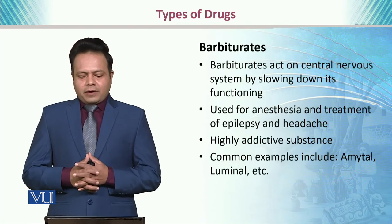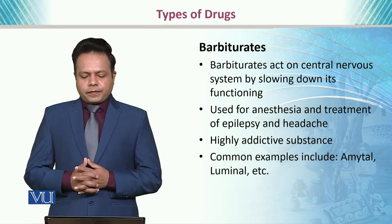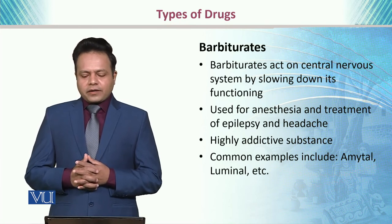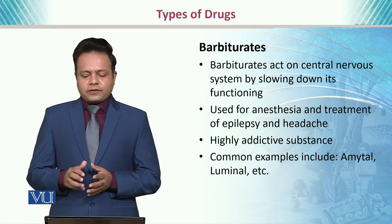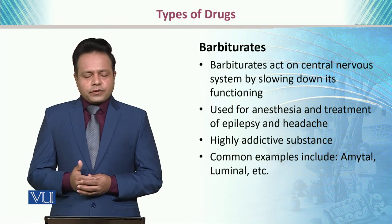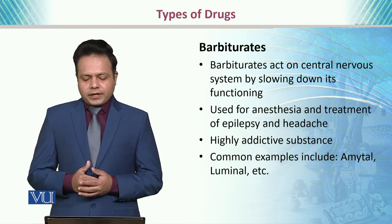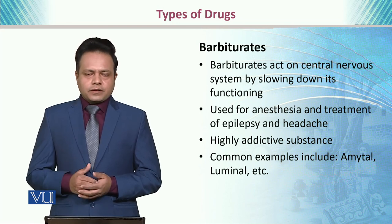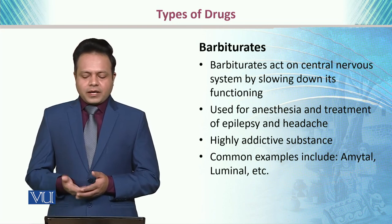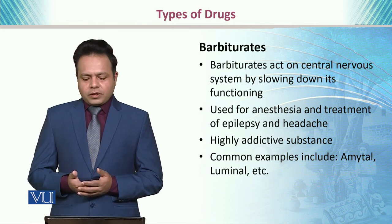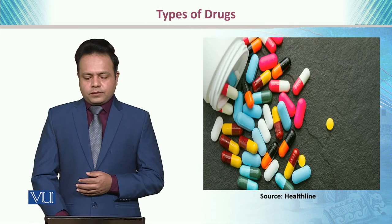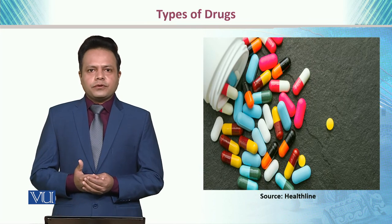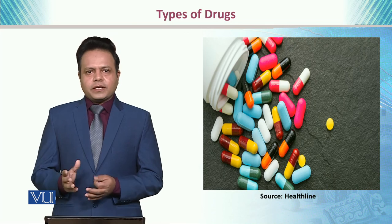Then we have barbiturates. Barbiturates act on the central nervous system by slowing down its functioning, and are used for anesthesia and treatment of epilepsy and severe headaches. These are considered highly addictive substances, and common examples include Amytal and Luminal. These are the different types of drugs which are identified and classified.